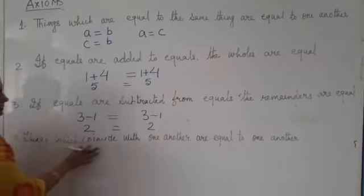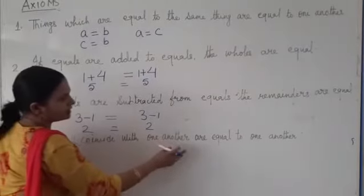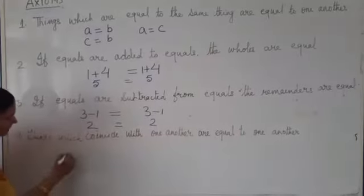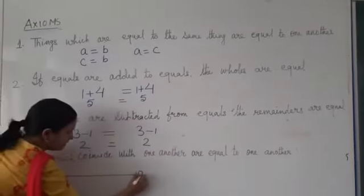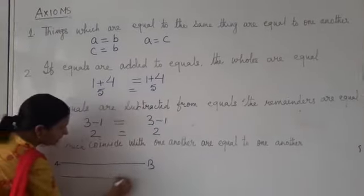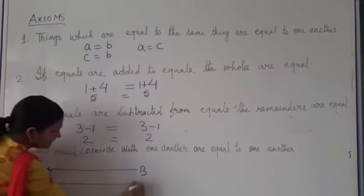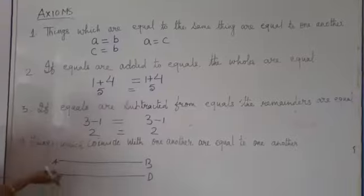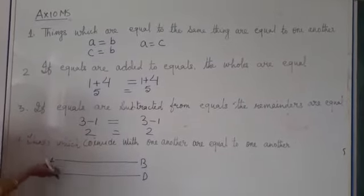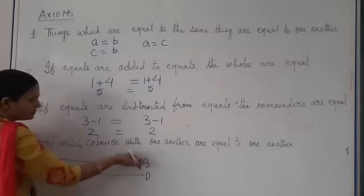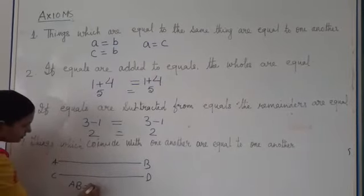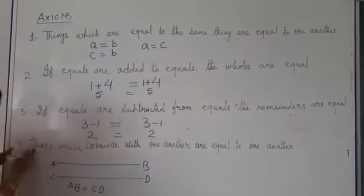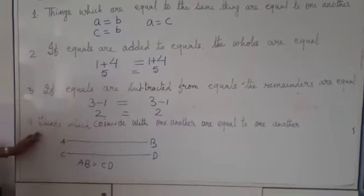So now, things which coincide with one another are equal to one another. So suppose, imagine that C is on A and D is on B. Then we can say that AB is equal to CD. This is what the fourth axiom states.